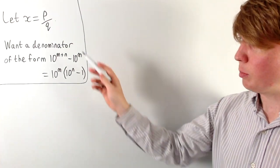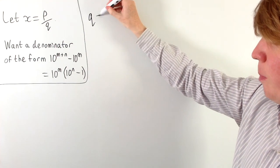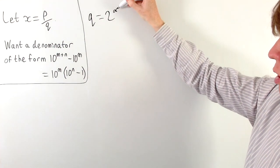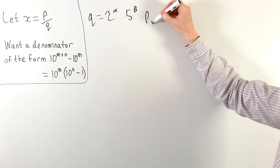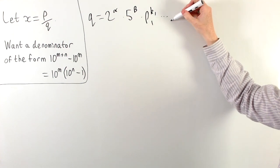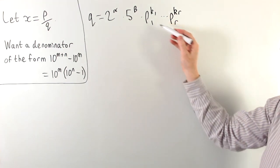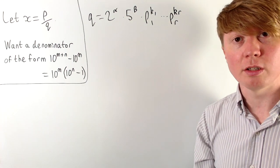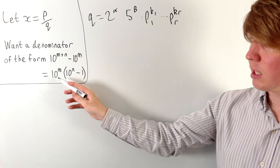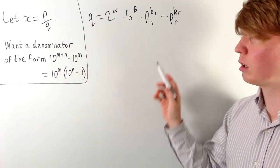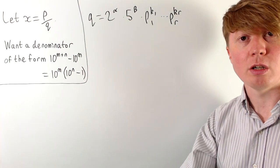We're interested in the prime factorisation of our original denominator q, and in particular the powers of 2 and 5. We'll call this 2 to the alpha times 5 to the beta, and then all of the other prime factors we'll call p1 to the power of k1 up to pr to the power of kr. These are all of our prime factors which aren't twos and fives. Our twos and fives are going to give us the 10 to the m term, and later we'll see how our other prime factors give rise to the 10 to the n minus 1 term.